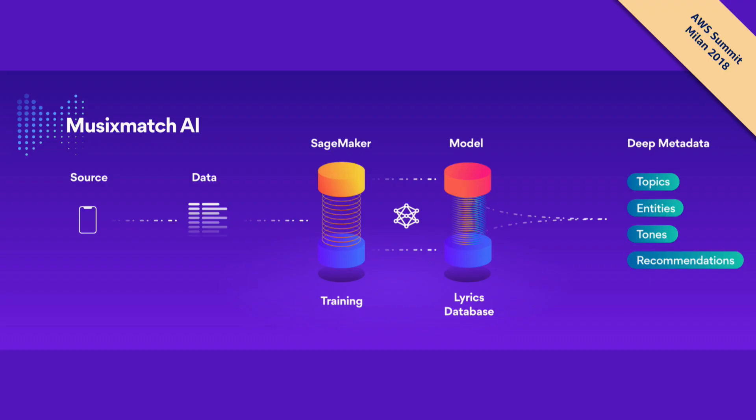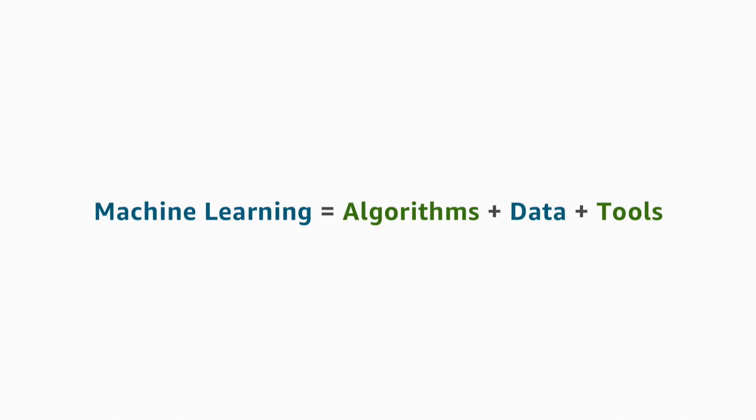An SDK is available for Python and Apache Spark integration. As an example customer use case: Musixmatch is a mobile app that shows lyrics while you listen to songs. Rather than standard item-based recommendation ('people who liked this song also liked that one'), they analyzed lyrics using topic modeling to find songs with similar topics or tone in the lyrics. They built this with SageMaker and are experimenting with a completely new way of discovering music.